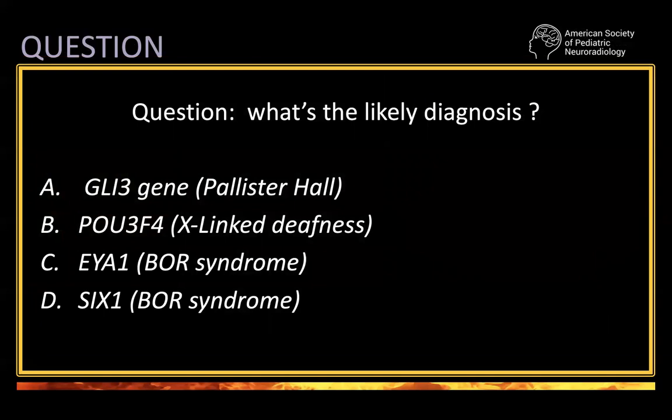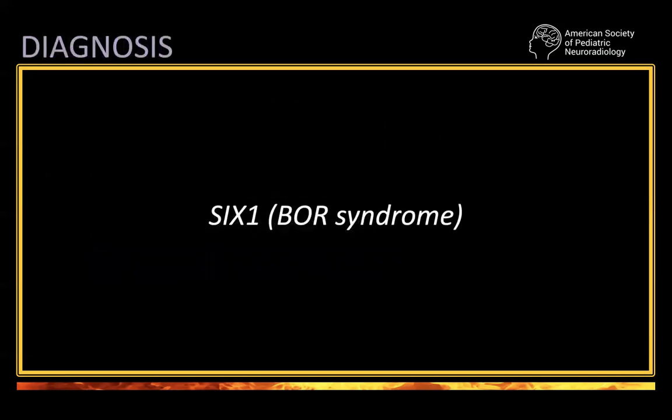What is this? Is it Pallister-Hall? Is it X-linked deafness? Is it branchio-oto-renal syndrome due to EYA1 mutation? Or branchio-oto-renal syndrome due to SIX1 mutation? Think about the association: neck, external ear, cochlear abnormalities, and kidney problems — you've already narrowed the differential because of the name. Of course, we have a problem in the branchial cleft, the ear, and the renal system — so this has to be branchio-oto-renal syndrome. But we can go further and identify the specific gene: SIX1.